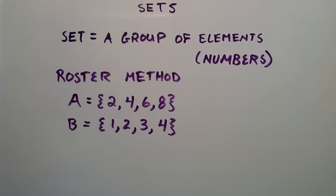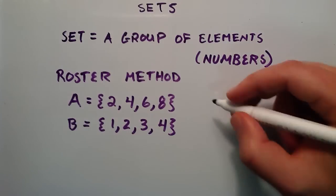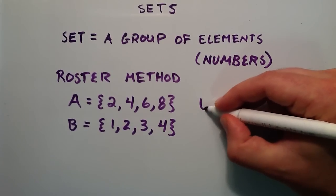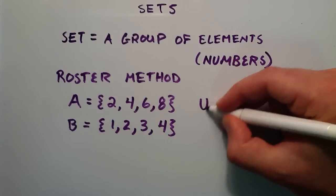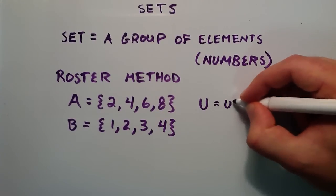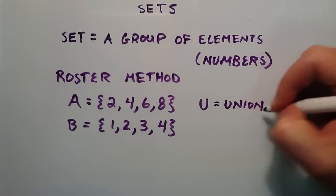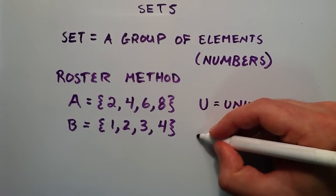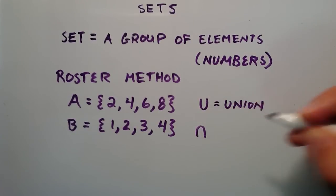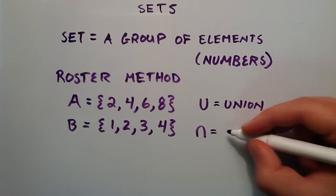Two things that we do a lot when dealing with sets is we find the intersection of a set and the union of a set. Let's write U here. This is the symbol that denotes a union. An upside-down U is the symbol that we use to denote an intersection.